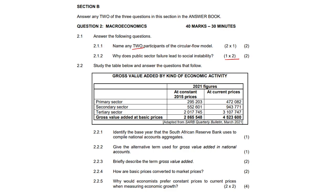This is the gross value added by kind of economic activity. The base year is going to be 2015, so these are the constant 2015 prices. You've got the primary sector — typically your big manufacturers; the secondary sector — like your wholesalers; and the tertiary sector — more your retailers. Manufacturers, wholesalers, retailers — it's usually like that 99% of the time.